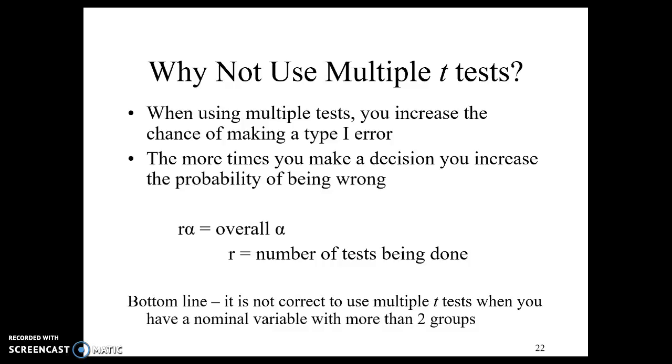Instead we do one test, which is an ANOVA that looks at the differences between all of them, and when we do our post-hoc tests we are accounting for trying not to make a Type 1 error or less of a chance.